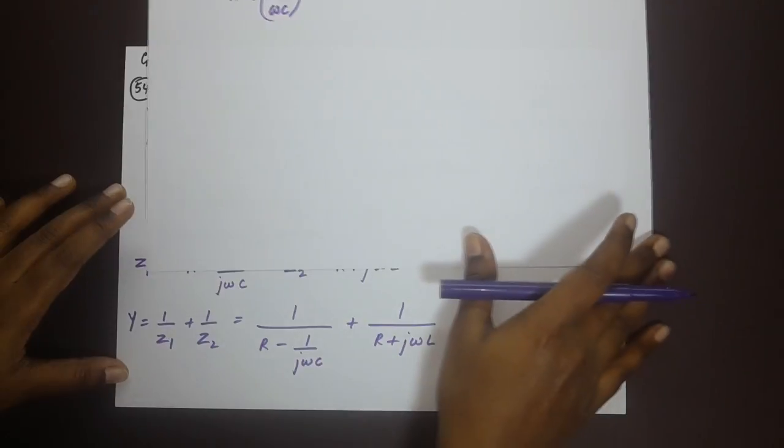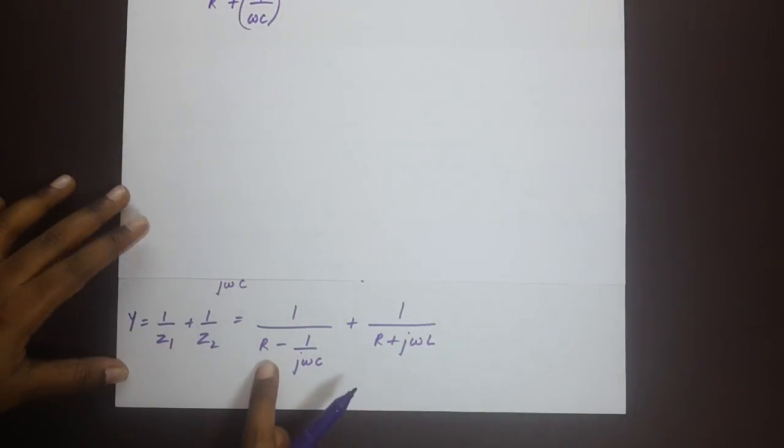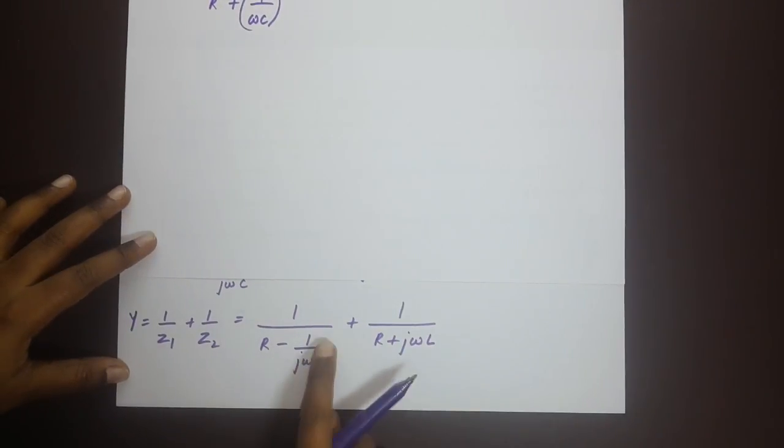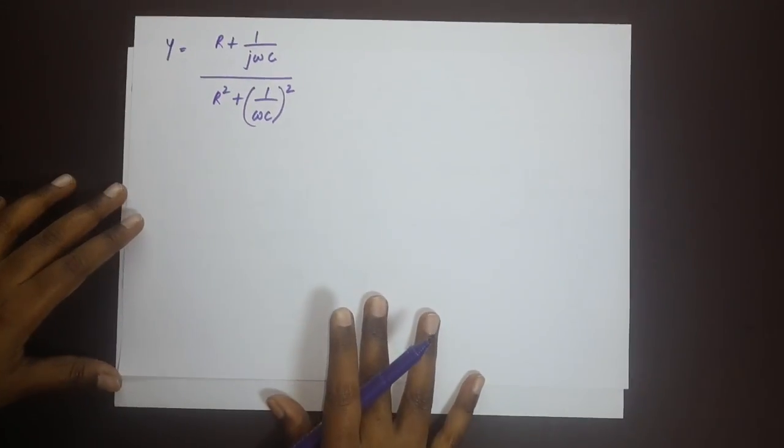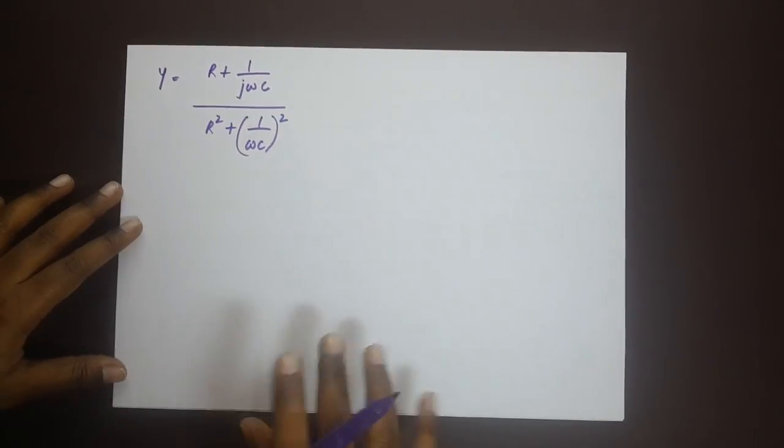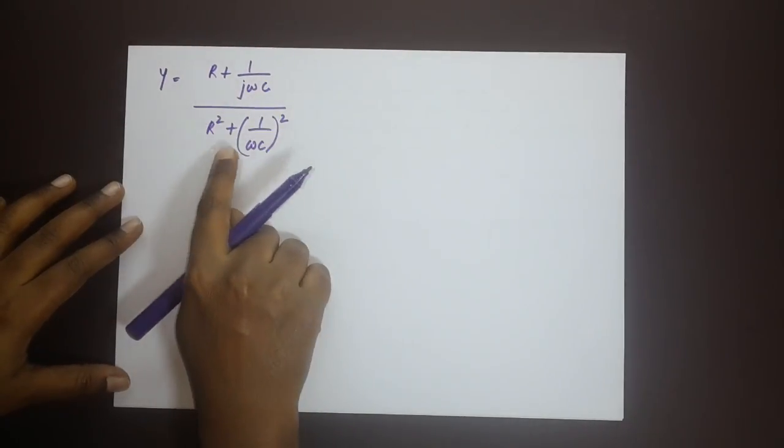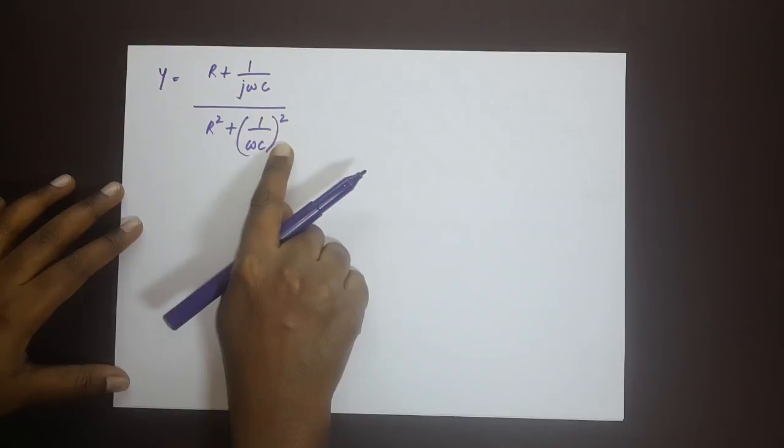Since I said rationalize the denominator, the denominator is R minus 1 by jωc. To rationalize it we would multiply both numerator and denominator with R plus 1 by jωc. That is how we get R plus 1 by jωc divided by R square plus 1 by ωc whole square.